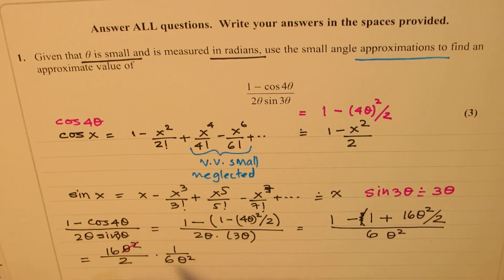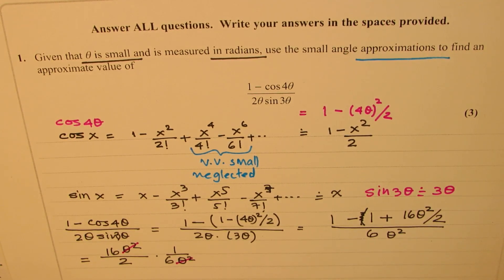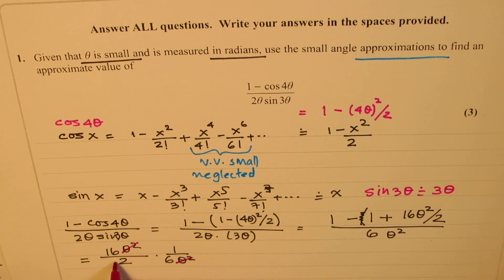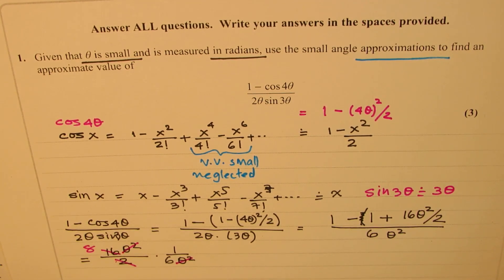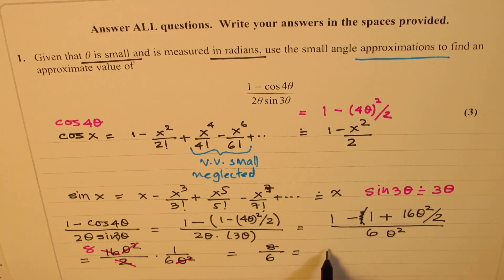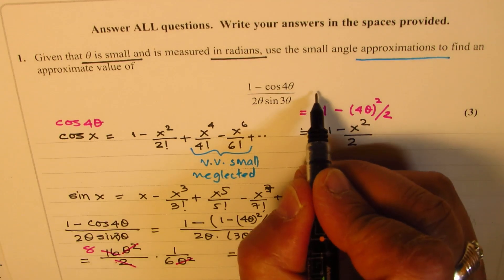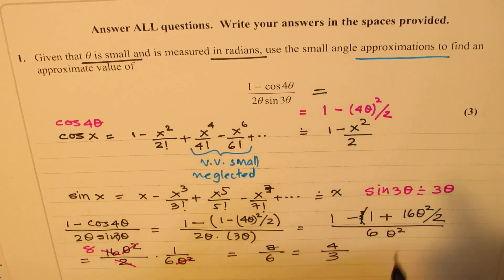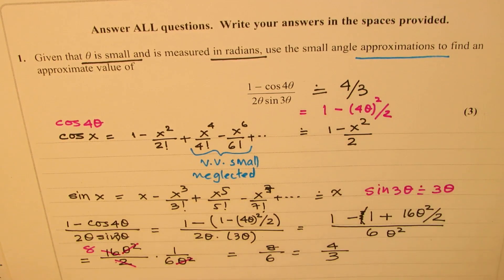Now 1 minus 1 is 0. So I could write this as 16 theta square by 2 times 1 over 6 theta square. So now theta square theta square cancel. And you can simplify this. So you could simplify. Divide this by 8. So you get 8 over 6. Let me rewrite this and then we'll simplify further. And then dividing both by 2, we get 4 over 3. So this expression is basically equal to approximately 4 over 3. Is that clear to you?